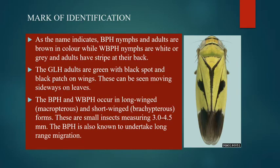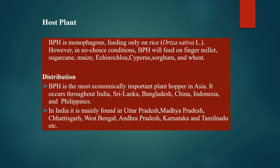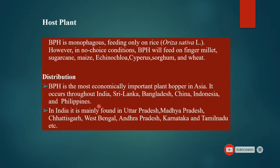BPH is monophagous, feeding only on rice; however, under no-choice conditions, BPH will feed on finger millet, sugarcane, maize, sorghum, and wheat. BPH is the most economically important plant hopper in Asia, occurring throughout India, Sri Lanka, Bangladesh, China, Indonesia, and the Philippines. In India it is mainly found in Uttar Pradesh, Madhya Pradesh, Chhattisgarh, West Bengal, Andhra Pradesh, Karnataka, and Tamil Nadu.